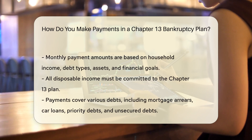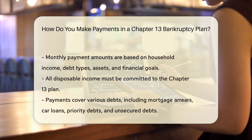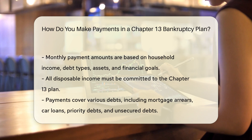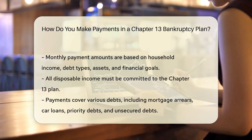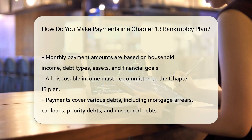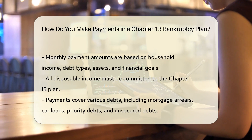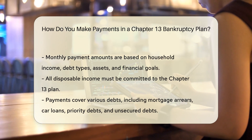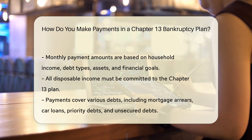How are payments calculated? The amount you pay each month is determined by several factors, including your household income, the type of debt you have, your assets, and your financial goals. For example, you must commit all your disposable income to the plan.